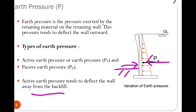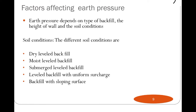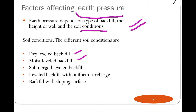The factors affecting earth pressure are: the type of backfill, the height of wall, and the soil condition. These are the main important things to consider while designing the retaining wall, because earth pressure directly depends upon the type of soil and the backfill. If the height of the wall is very high, the pressure will also be more. The soil conditions include: dry level backfill, moist level backfill, submerged backfill, leveled backfill with uniform surcharge, and backfill with sloping surface.